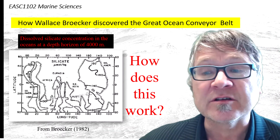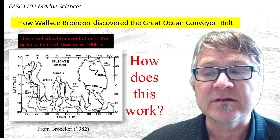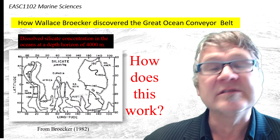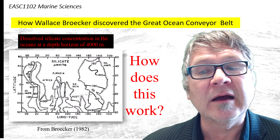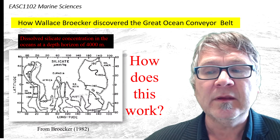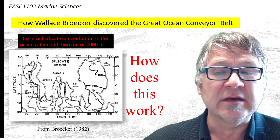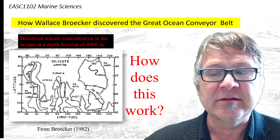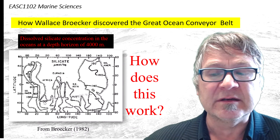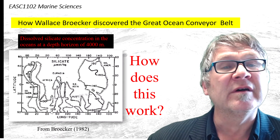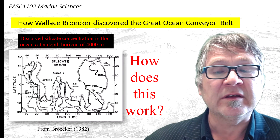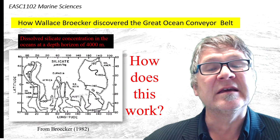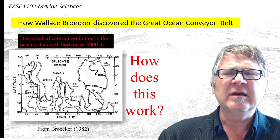Let's have a look at the structure. What does the silicate concentration look like? It's in micromoles per kilogram. The lowest numbers are in the North Atlantic — 20. Then it increases as you go to the South Atlantic: 60 on one side, 100 on the other. It increases further through the Indian Ocean to 120, and then you reach 160 as you reach the North Pacific.